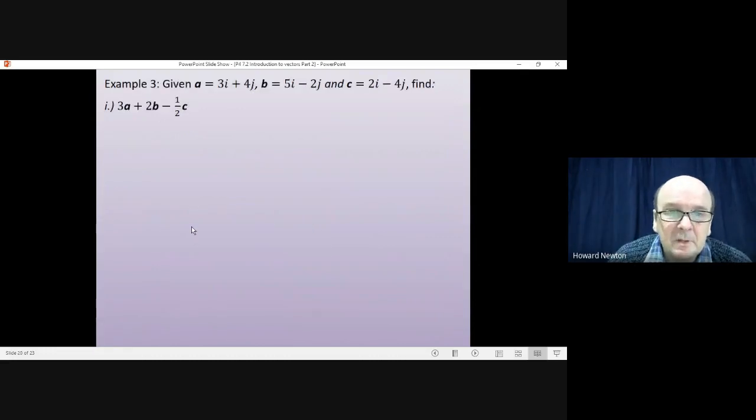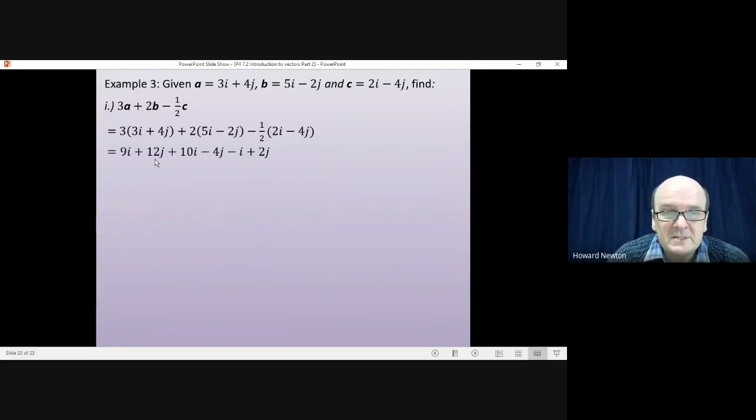Okay, let's have a look. So first of all 3a plus 2b minus 1 half c. So staying with the i and j notation. That'll be 3 times by this plus 2 times by that minus 1 half times by that. You multiply the brackets in the normal way. That'll give you 9i plus 12j plus 10i minus 4j minus i plus 2j. And you collect the terms in the normal way. So collecting the i's together we get 18i. Collecting the j's together we get 10j. And writing that as a column vector it would be the vector 18, 10. And I say again these do mean exactly the same thing. Just two ways of writing down a vector.